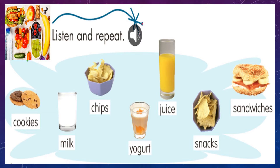Very good, my kids. Now we are going to check our vocabulary. Ahora vamos a revisar nuestro vocabulario. Cookies — galletas. Milk — leche. Chips — papitas. Yogurt — yogur. Juice — jugo. Snacks — bocaditos. And sandwiches — sandwiches.